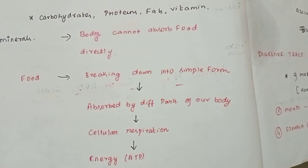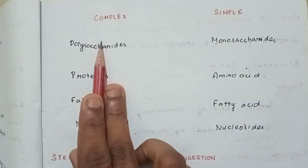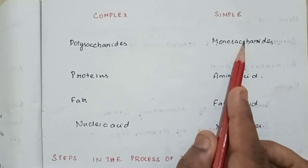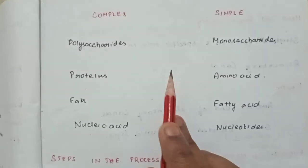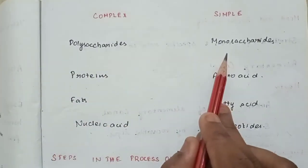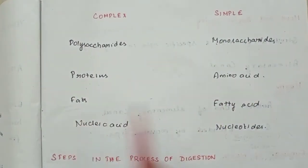If we absorb anything in complex form, we need to break it down. We will use cellular respiration to get energy. So how do we convert from complex form to simple form? Polysaccharides become monosaccharides, protein becomes amino acids, fat becomes fatty acids,